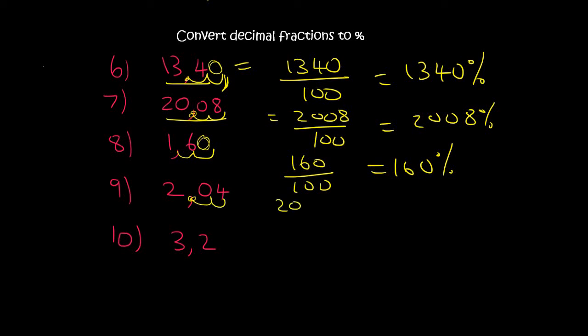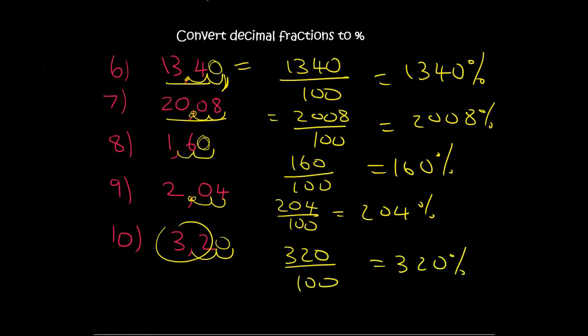Two decimals, 1, 2, so that's 204 over 100, and that's 204%. 3.2, go two decimals, so that's 320, because I found a 0 there. Over 100, and that's 320%.